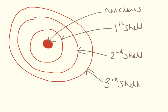In the middle we have our nucleus, and we have shells going out from it. On the first shell, we can have two electrons. On the second shell, we can have eight electrons. And on the third shell, we can have eight electrons. This 2,8,8 pattern is important when we want to draw the arrangement of electrons around an atom.